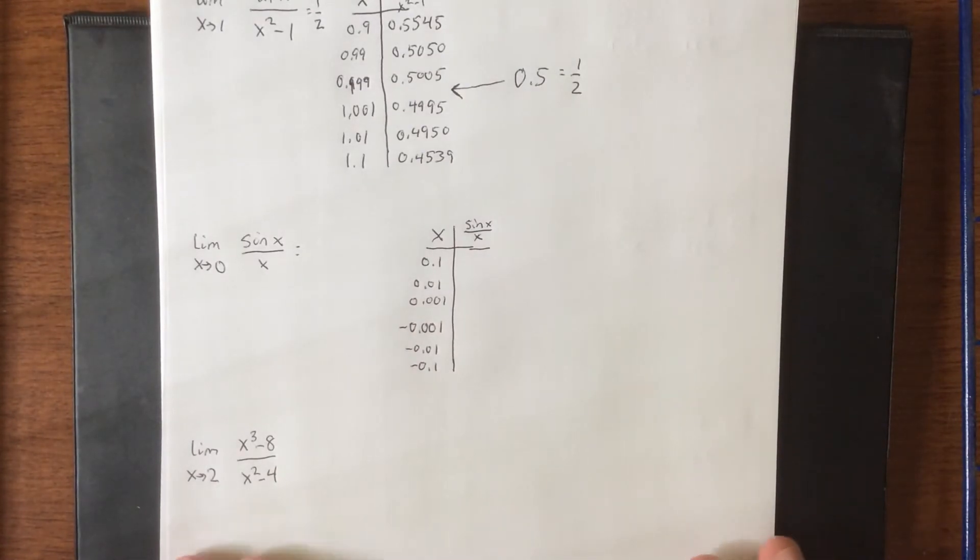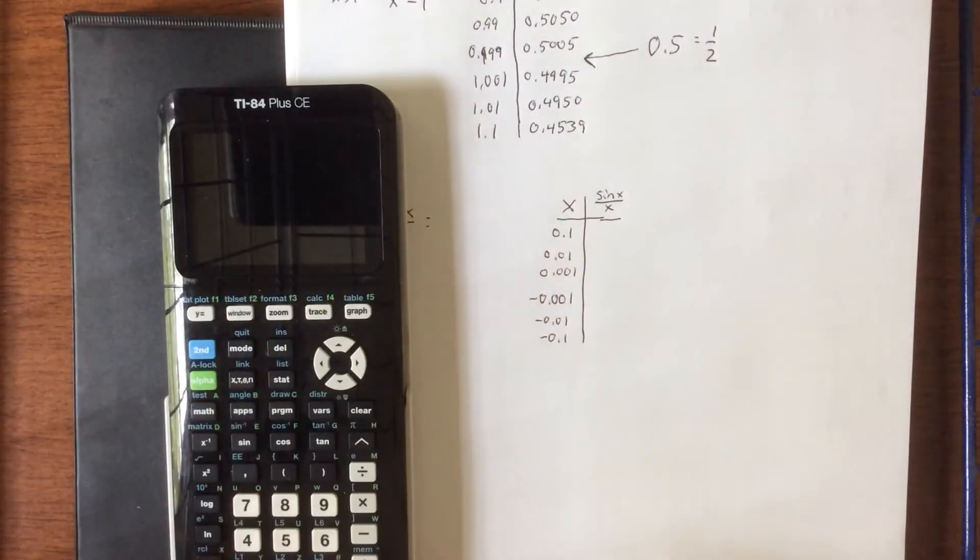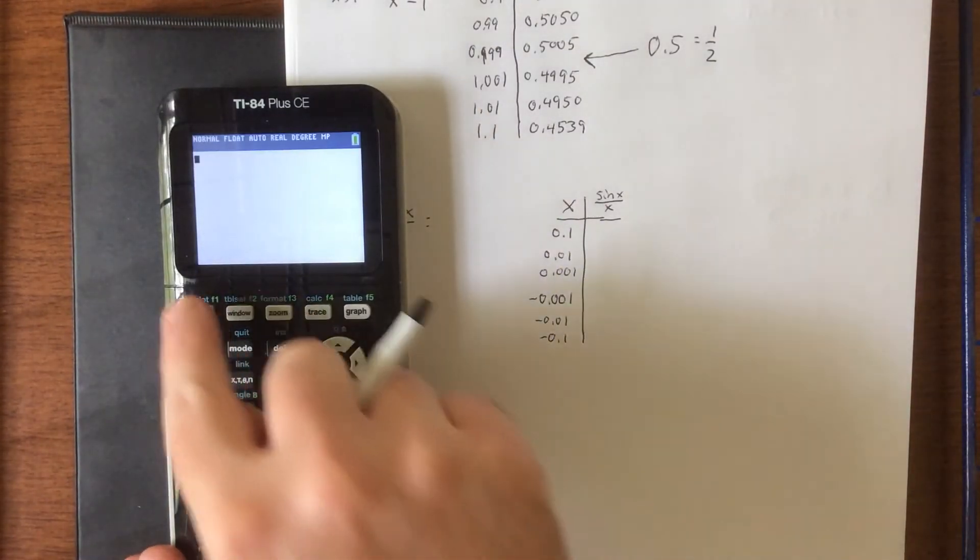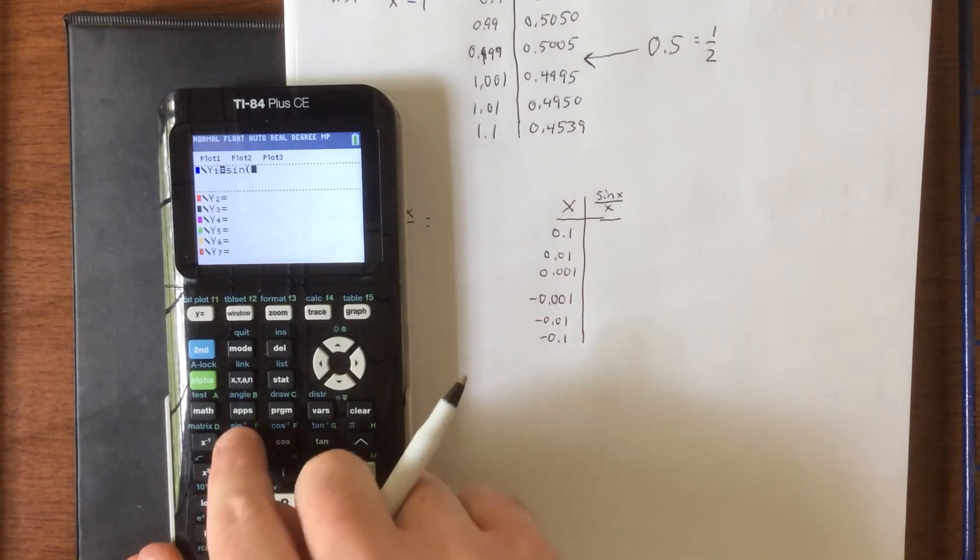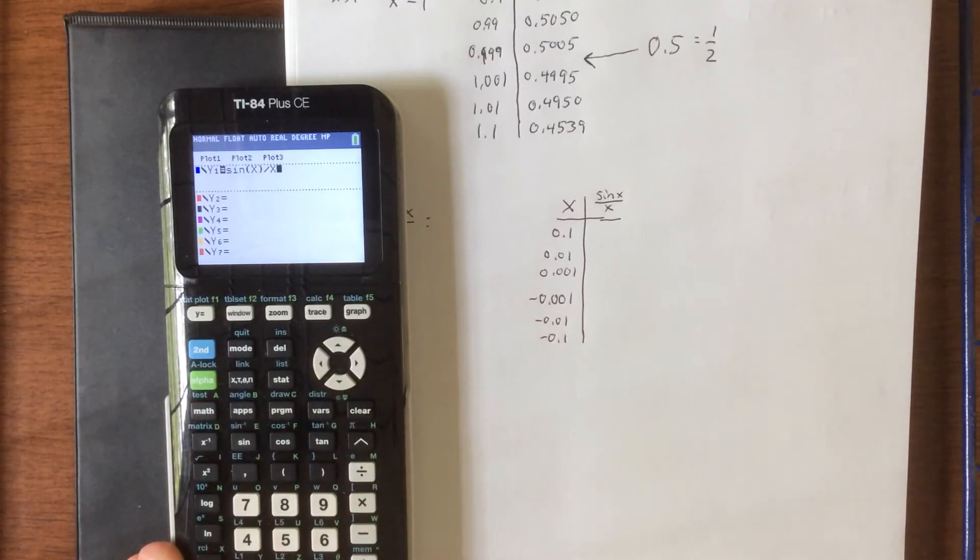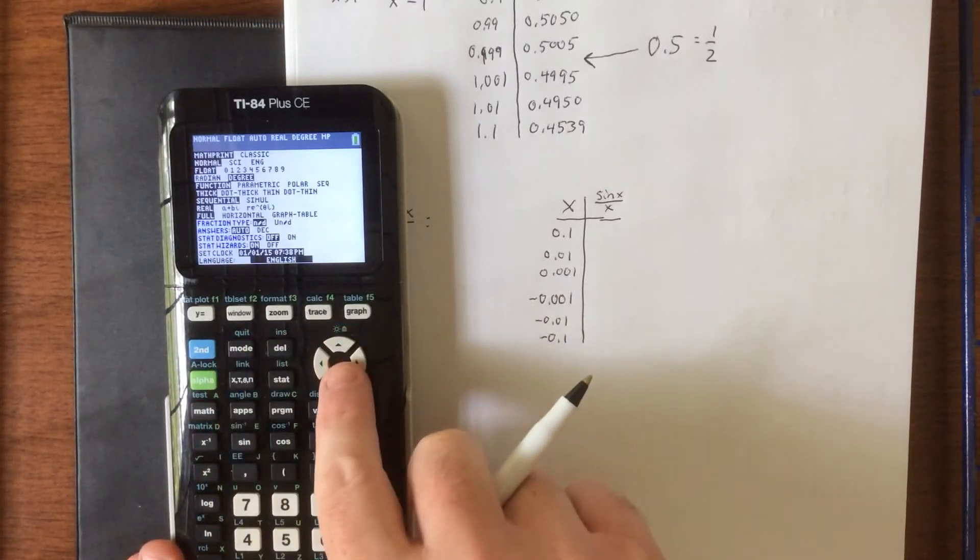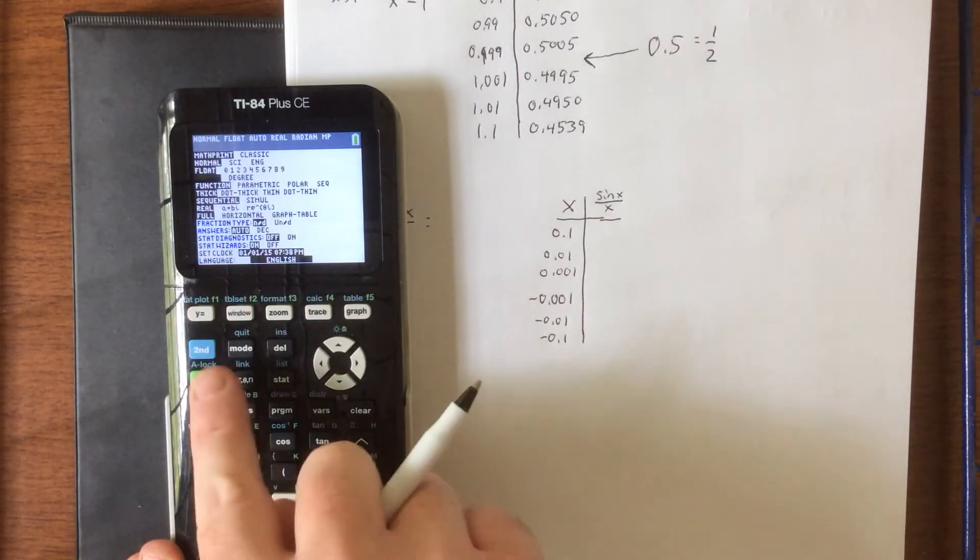So this will be the expression that I plug into the graphing calculator. We'll clear out what we just did on the previous problem. So we'll type in sine of x, close the parentheses, divided by x. And let's go ahead and hit mode just to make sure that our calculator is in the appropriate radian mode. You'll notice that mine was not, so it's a good thing I checked.